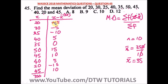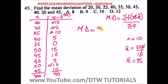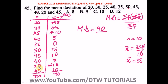For mean deviation, the negative signs don't count — we take absolute values. Adding all those values gives us 90. So the mean deviation equals 90 divided by n, which is 90 divided by 10, giving us 9. Our mean deviation is 9, and the correct option is option B.